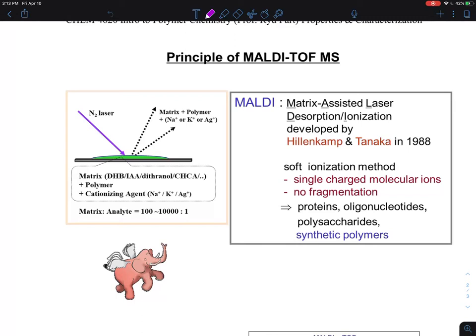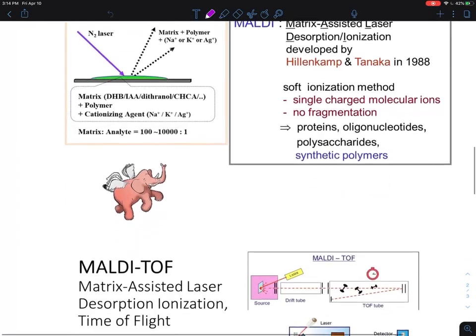This is known as a soft ionization method. It's not made for polymer analysis, but actually for protein analysis and oligonucleotides. These are very easy to charge polymers or macromolecules.